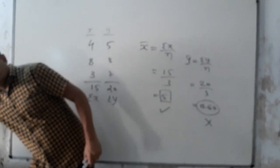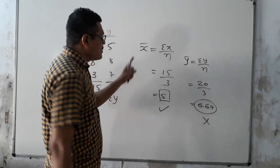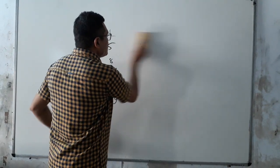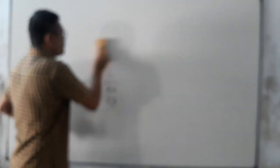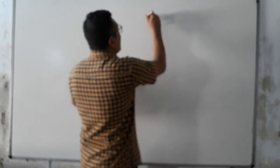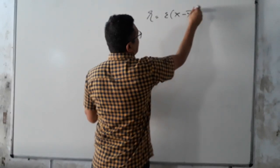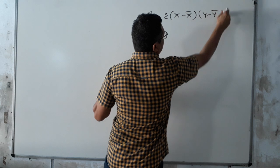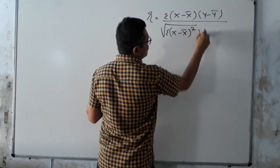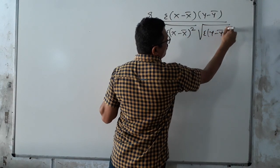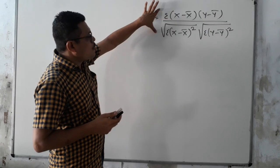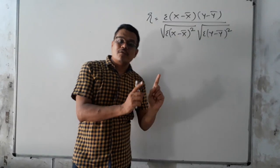Just remember: method number 2 is used when the mean is not a fraction. You have to find the correlation from this formula. Write the formula with me: R = Σ(X − X̄)(Y − Ȳ) upon under root of Σ(X − X̄)² multiplied by Σ(Y − Ȳ)². We use this formula when the mean is not a fraction.